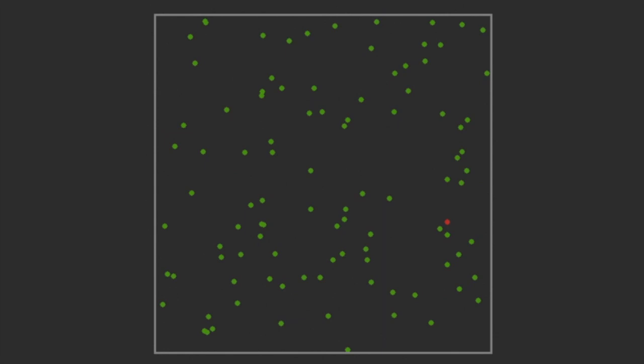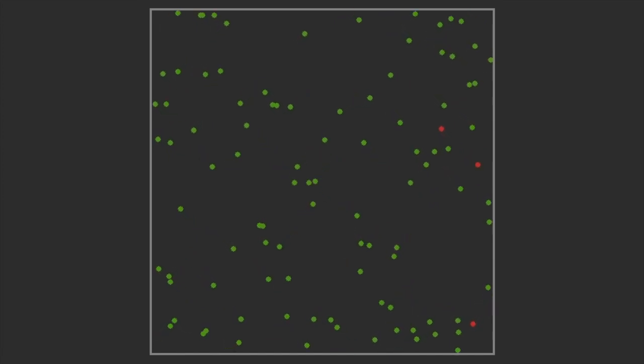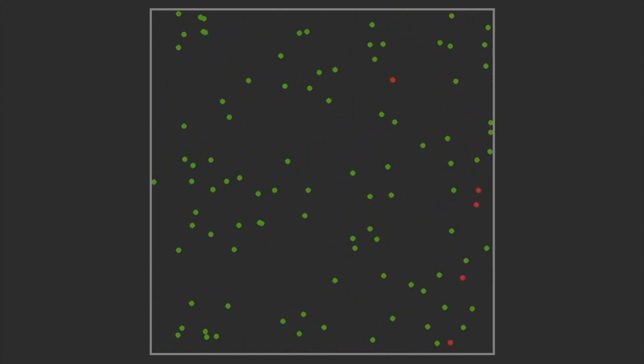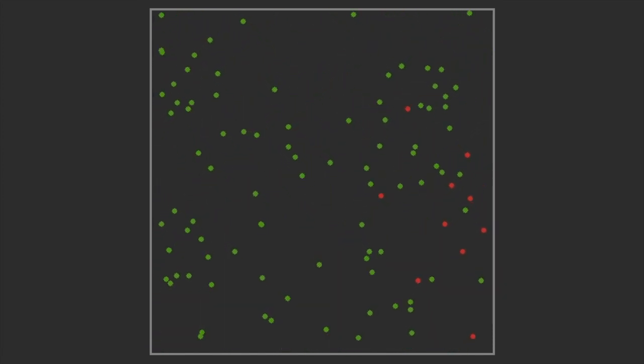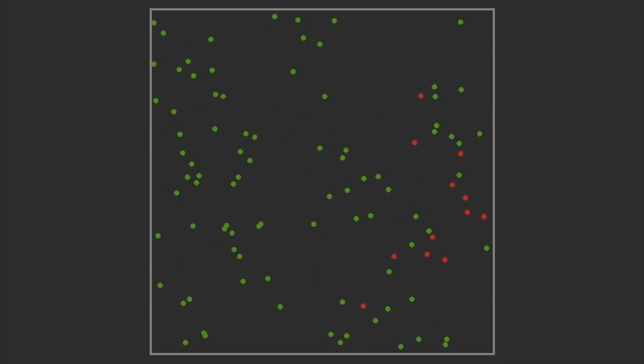The green dots represent the healthy population while the red dots represent the infected people. The inhabitants move around and interact with various people. If even one person gets infected, then the whole community is at risk.